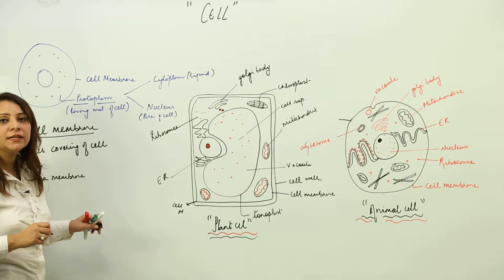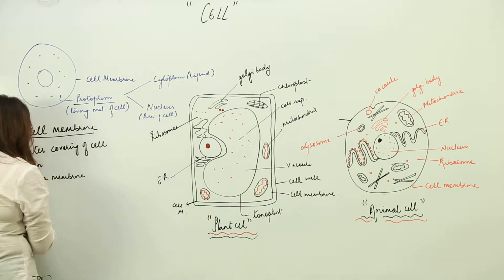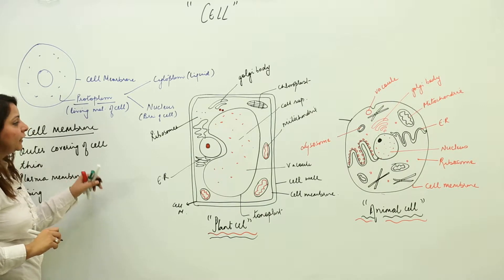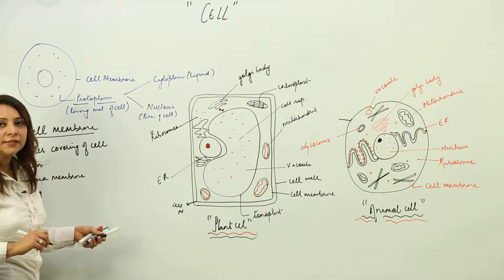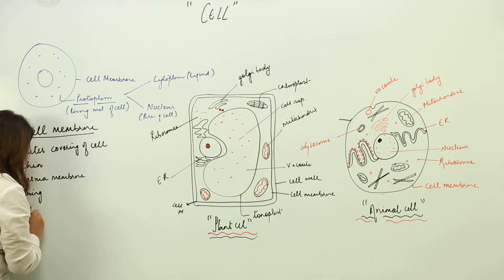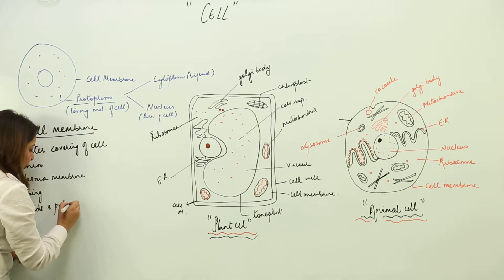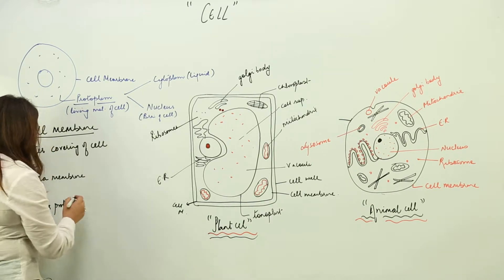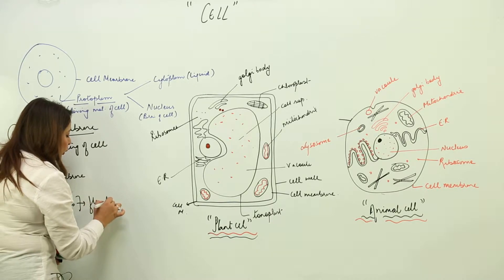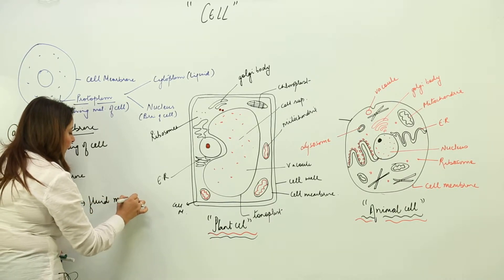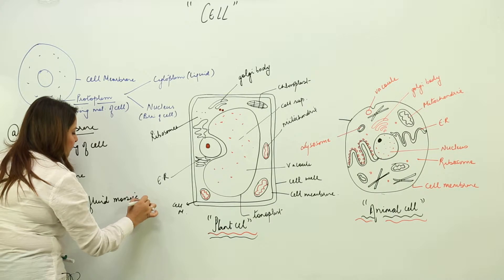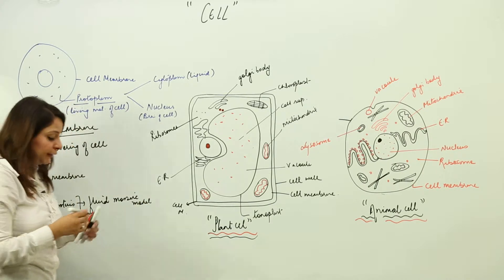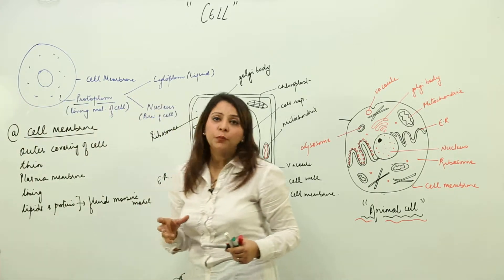The cell membrane is living in nature. It is made up of lipids and proteins — lipids embedded in proteins. The arrangement of lipids and proteins gives rise to a special model called the fluid mosaic model.